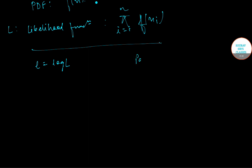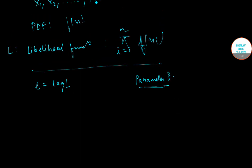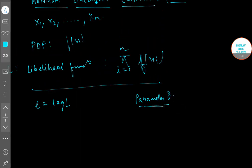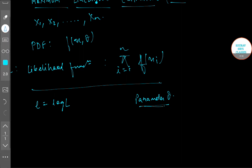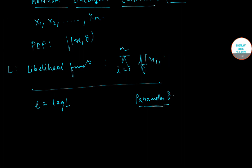Say we need to estimate the parameter theta. If I write it in a more detailed way, then the PDF can be written as f(x, theta). Therefore, the likelihood function is the product of f(xi, theta), and this is L(x, theta). So small l is equal to log of capital L(x, theta).